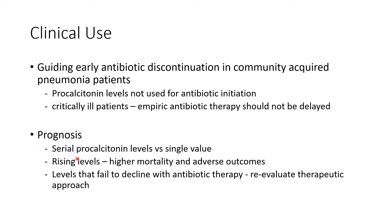Procalcitonin levels can also relate to prognosis. Serial levels are more helpful in determining prognosis than a single value. Rising levels are indicative of higher mortality and adverse outcomes, and levels that fail to decline with antibiotic therapy suggest a need for re-evaluation of the therapeutic approach, such as escalating to higher or longer antibiotic regimens.